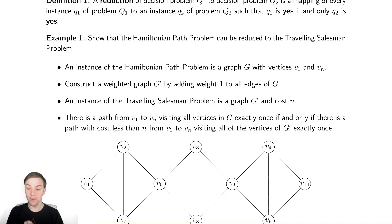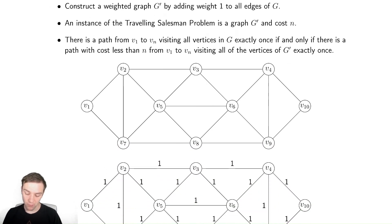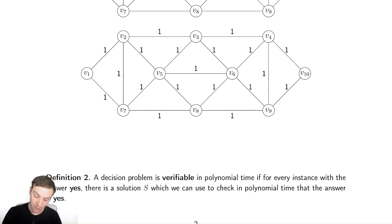The last thing I'll mention in this video is that with reference to those decision problems of is there a thing, is there a Hamiltonian path, we say that they are verifiable in polynomial time. If every instance with an answer yes, there's some solution, s is an abstract idea of a solution, which we can use to check that the answer is in fact yes. So if I give you the answer, can you check it? Hamiltonian path, it's really easy.